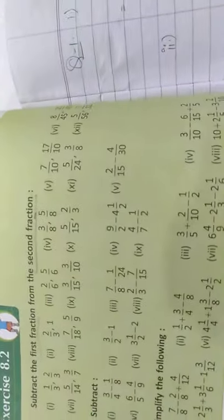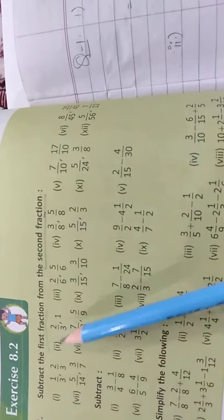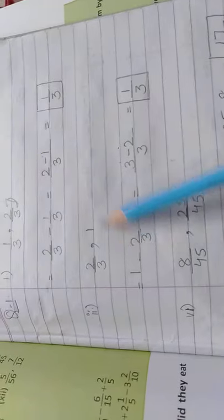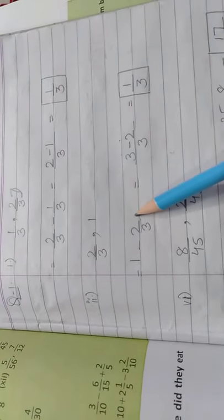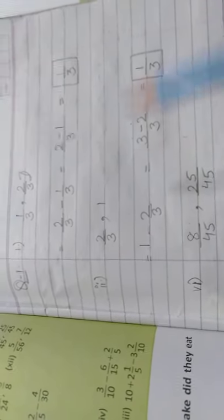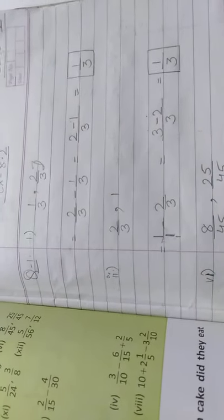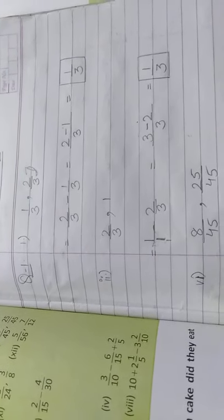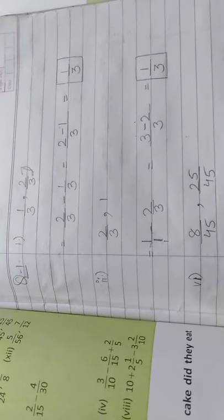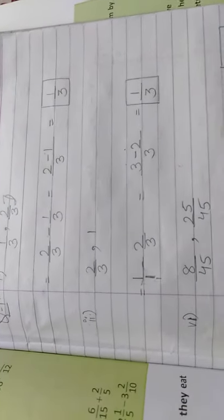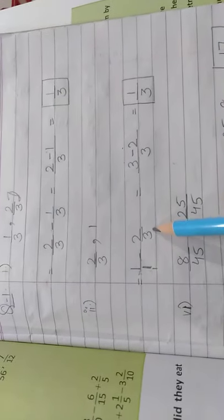The second part has fractions 2/3 and 1. We subtract 2/3 from the second fraction, which is 1. When a number has no denominator, we assume the denominator is 1. So we have 1/1 minus 2/3. Now both denominators are different — one is 1 and the other is 3 — so we take the LCM of 1 and 3, which is 3.